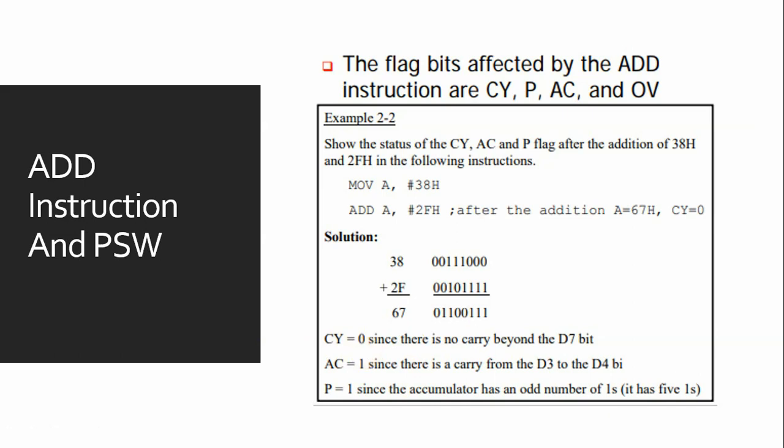Similarly, there is a carry from D3 to D4, so AC will be 1. The parity flag: we have to calculate the number of zeros and ones. The accumulator has an odd number of ones, so P will be 1.